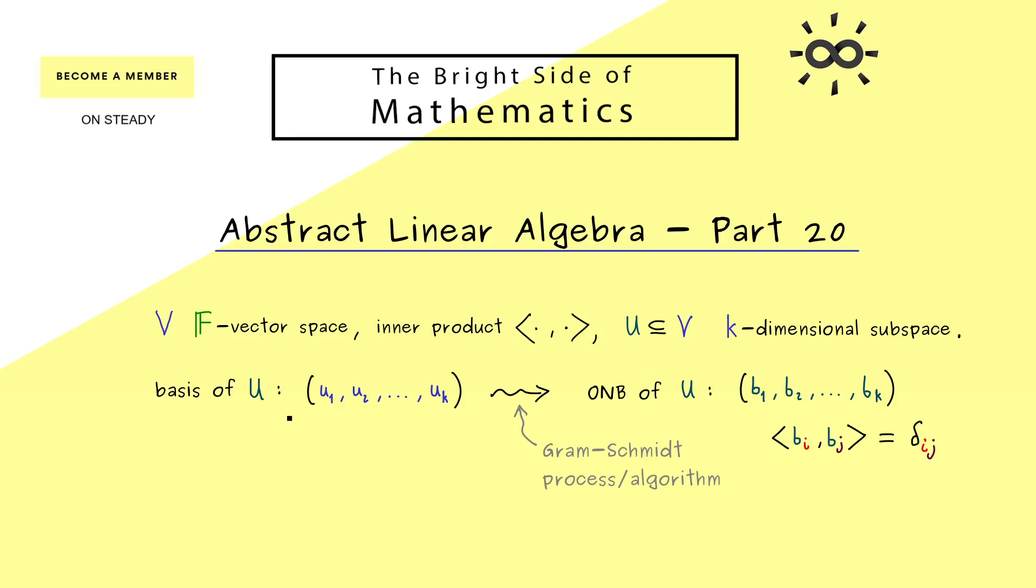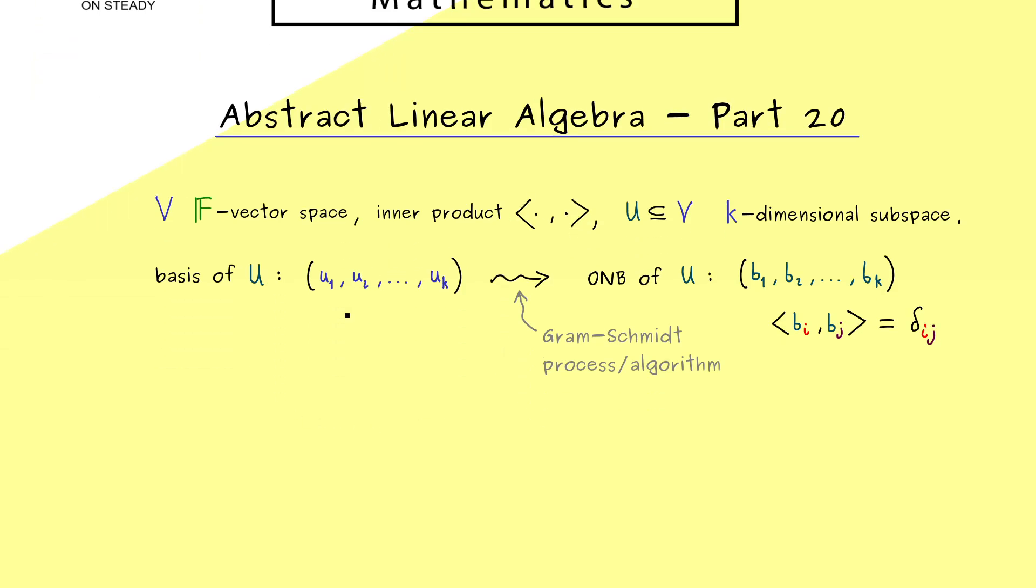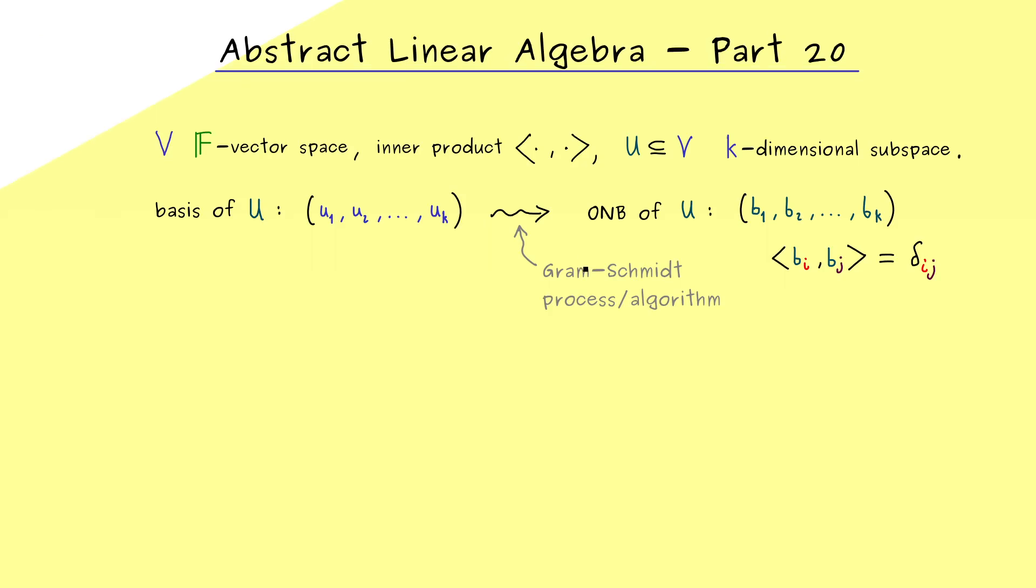And now this procedure, going from a basis to an ONB, is called the Gram-Schmidt process or Gram-Schmidt algorithm. Moreover, you could also say what we do here is just an orthonormalization of a basis. This means we have to do two things. First, we have to make the vectors mutually orthogonal, and then we have to normalize them. And indeed we can do that for each vector separately.